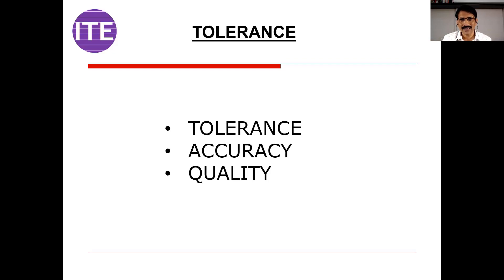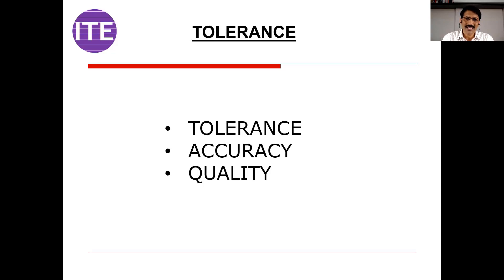When we say quality, the simple definition is customer satisfaction. Suppose you purchased a bike and your friend asks how is your bike — you say it's a quality product. You are not saying what is the tolerance of that piston and cylinder. Quality product means you are happy with the product because there are no problems with the vehicle. As per your satisfaction, all standards are meeting. But when we say tolerance, it is related to a dimension or a geometry.